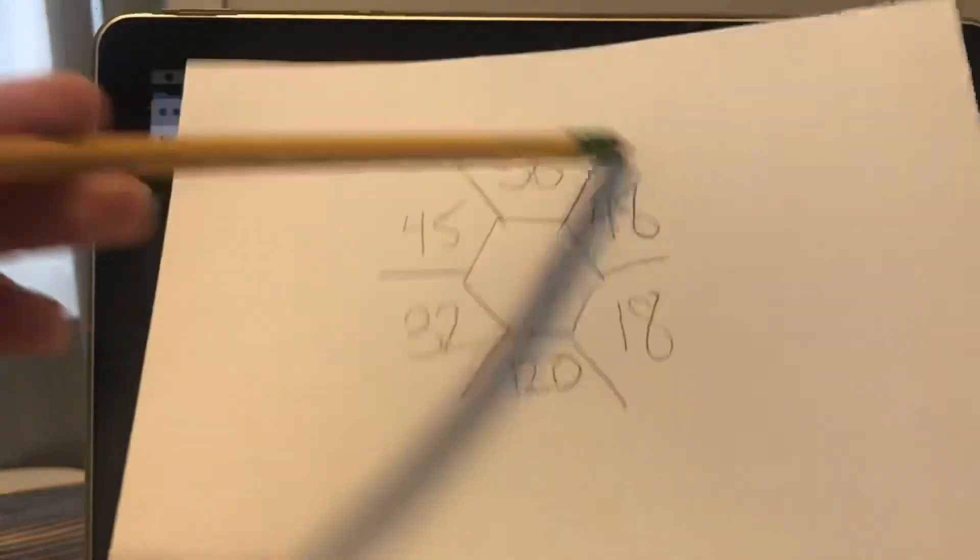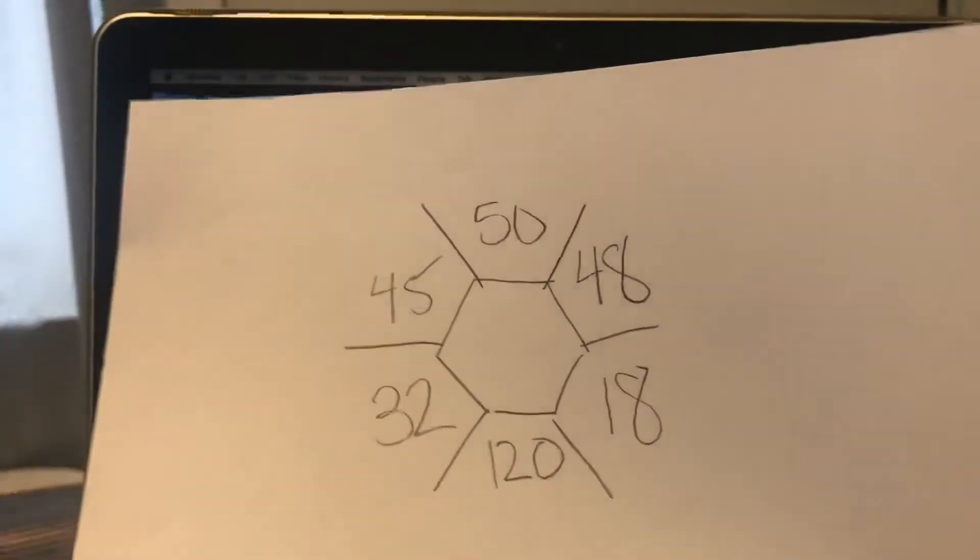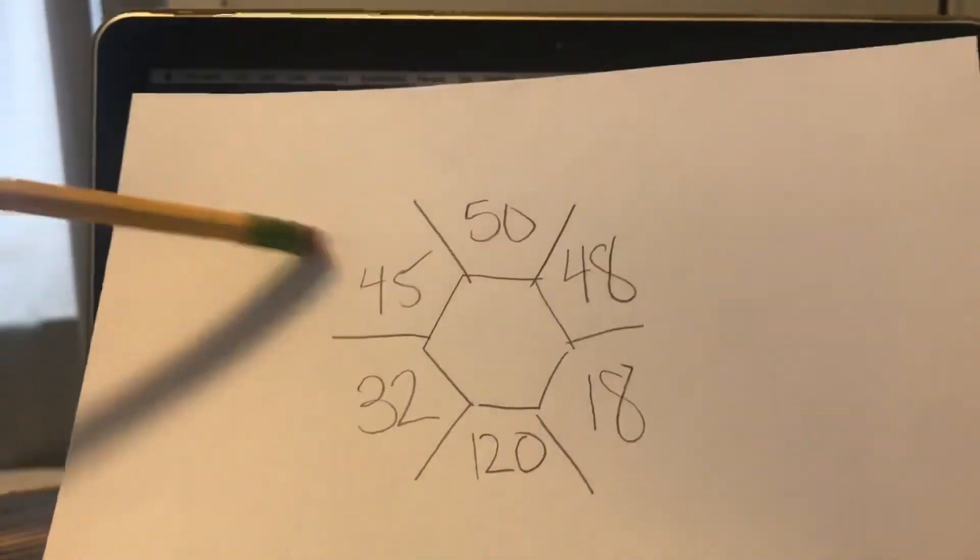So I'm gonna take all these numbers from the big hexagon puzzle up top, and I'll plug them down here. So it'll look like this. And I need to add them all up together.